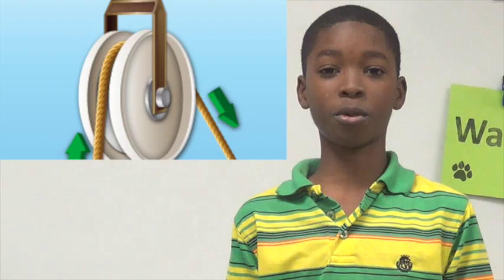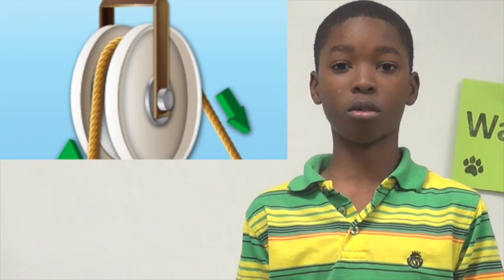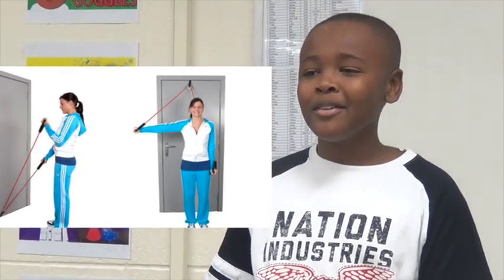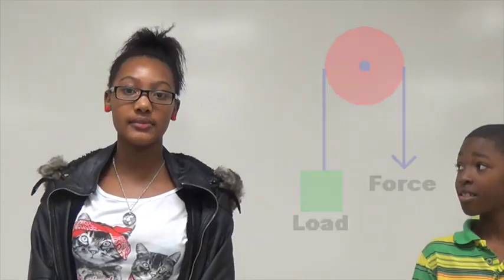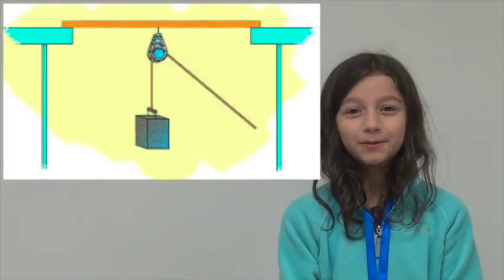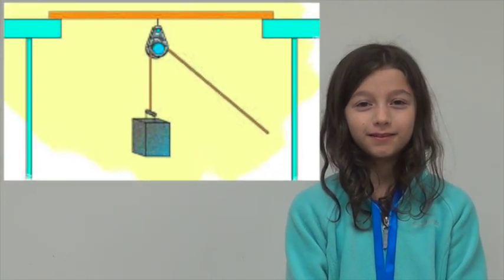A pulley has a grooved wheel with a rope running along the groove. A pulley can change the amount or the direction of the force applied. A pulley can reduce the effort force needed to lift an object. A fixed pulley only changes the direction of the force. Pulleys that are fixed, meaning they are attached to something, can be found on top of a flagpole or a window blind.